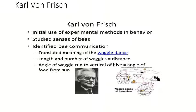The third Nobel laureate, Karl von Frisch, initially used experimental methods in behavior — he was the first to do so. He studied the senses of bees and identified bee communication, translating the meaning of the waggle dance. The length and number of the waggles is equal to distance, and the angle of the waggle run to the vertical is equal to the angle of food from the sun. Bee language was discovered by Karl von Frisch — a very important discovery.